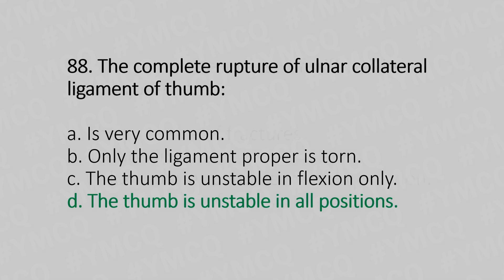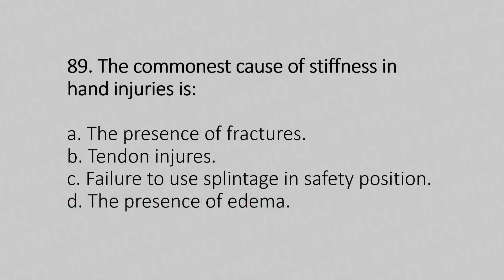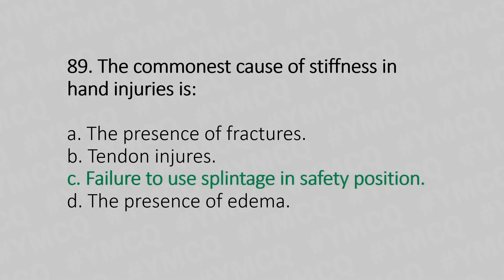Let's move to question number 89. The common cause of stiffness in hand injury is: Option A, the presence of fractures. Option B, tendon injury. Option C, failure to use splintage in the safety position. Option D, presence of edema. The answer is Option C, failure to use splintage in the safety position.